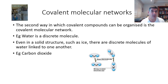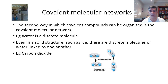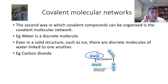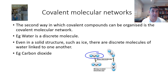Covalent networks were characterised by the fact that all of the atoms were joined together with strong covalent bonds. In a covalent molecular solid, it's slightly different, because we can see distinct molecules, and these molecules are held together by weaker physical bonds. So we need to start talking about the second type of bond that holds atoms together in a solid.